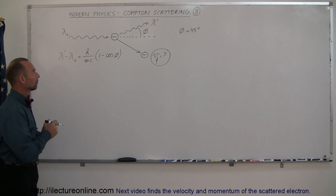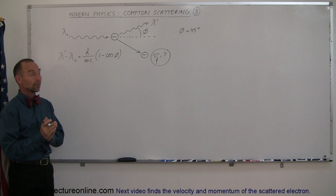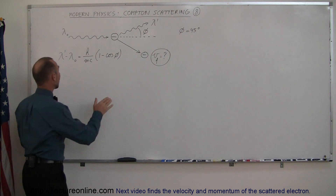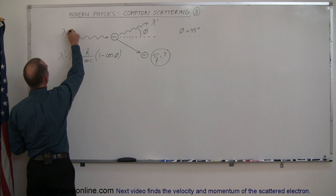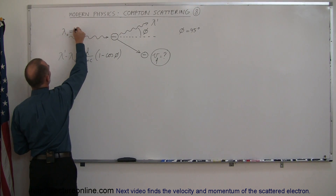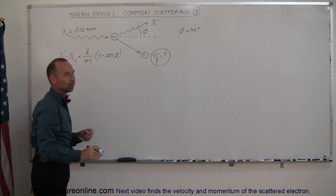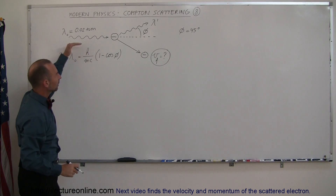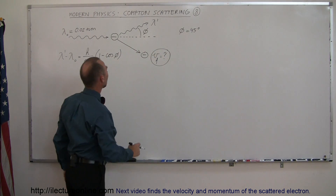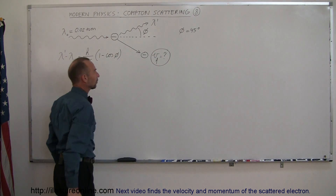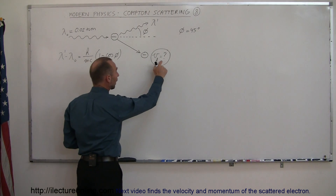Our next section on modern physics is still on Compton scattering, but what we're going to do now is the following. Remember that we had an incoming photon of very high energy. Let's say the incoming photon has a wavelength of 0.02 nanometers, which means that this would be an x-ray photon. It hits an electron and goes scattering off at some angle — let's say 45 degrees — and so the electron will get pushed off to the side at some velocity. This time we're supposed to find the velocity of the electron.